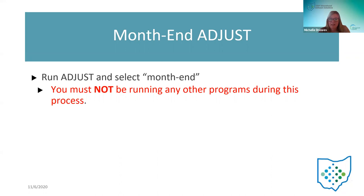Once that's done, you run adjust and select month-end. Make sure no one else is in the programs when they're running it. That will officially close them out for the month of December.